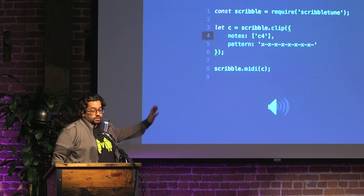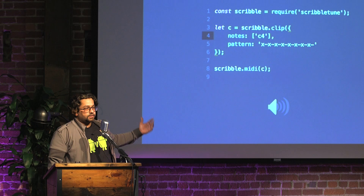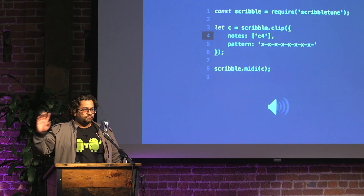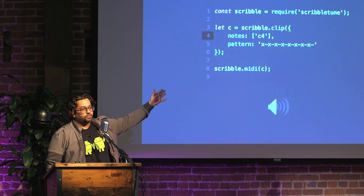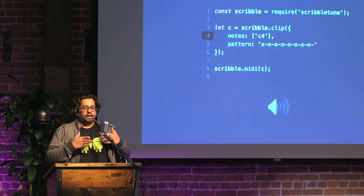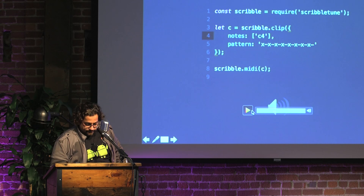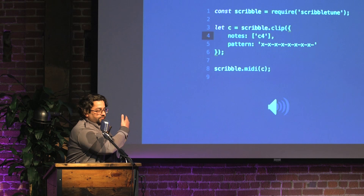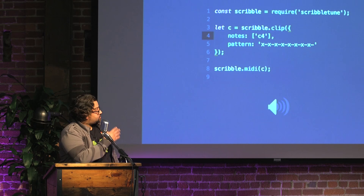Going back to this, the note is still C4 and now we're giving it a pattern. That pattern is made up of just `x` and hyphens — there is also an underscore but we'll leave that for now. Basically `x-x-x-x-x-x-x-x`: note on, note off, note on, note off. There are 16 of them. In electronic dance music, every bar is made up of 16 beats — you can change that, but by default it's 16. So if I play that, it took the note and played every time it saw an `x`, and did nothing on a hyphen.